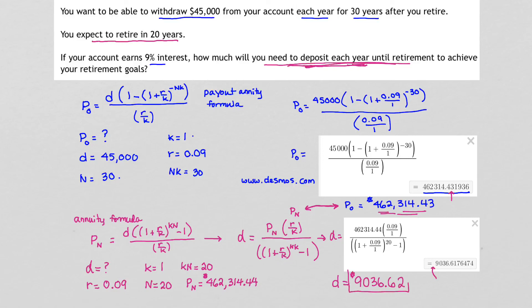This is how much money we will need to deposit every year if we want to retire in 20 years and be able to withdraw $45,000 from our account each year for 30 years.